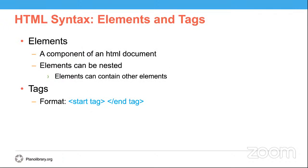HTML syntax consists of elements and tags. An HTML element is a component of an HTML document. It is the markup that you use to give meaning to the HTML document. There are several different types of elements, such as paragraphs and headings. You're able to nest most HTML elements, meaning an element can contain other elements. For example, you can nest a link — which is technically called an anchor element — within a paragraph element. Most HTML elements, not all but most, are written with a start tag and an end tag. These tags are used to mark up the start and end of an HTML element.